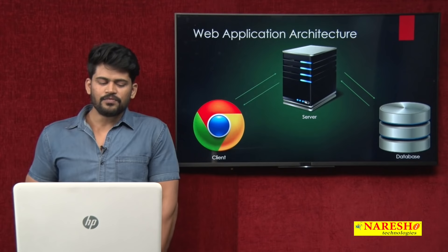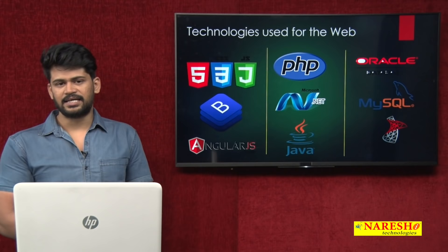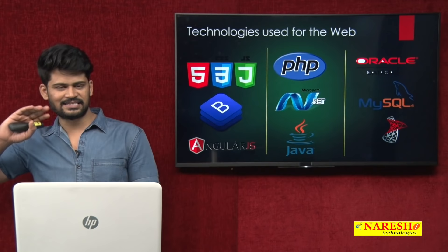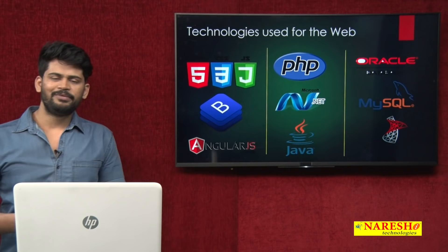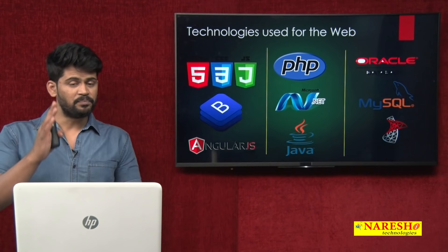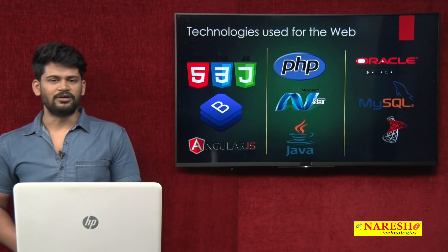For each web application, there are different technologies. The first column is client-side, the middle is server-side development, and the last is database. You name any web application — they use one or other database, one or other server-side technology, and the client side is always the same. For database: Oracle, MySQL, or SQL Server. For server side: PHP, .NET, and Java. For client side: HTML, CSS, JavaScript, Bootstrap, and AngularJS.